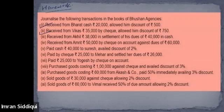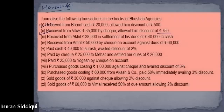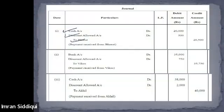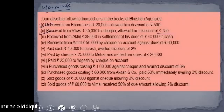Received from Vikas 35,000 by cheque, allowed him a discount of 750. Hrithika, tell me the correct general entry for this. Perfect, very good, that's right. The correct general entry is: bank account debit, discount allowed account debit, to Vikas account.